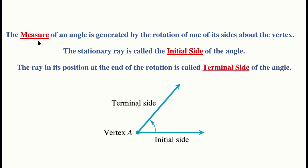The measure of an angle is generated by the rotation of one of its sides about the vertex. One side stays stationary — we call that the initial side of the angle. We then rotate the other side about the vertex. The ray at the position at the end of the rotation we call the terminal side. So the terminal side is the final position of the rotated ray.